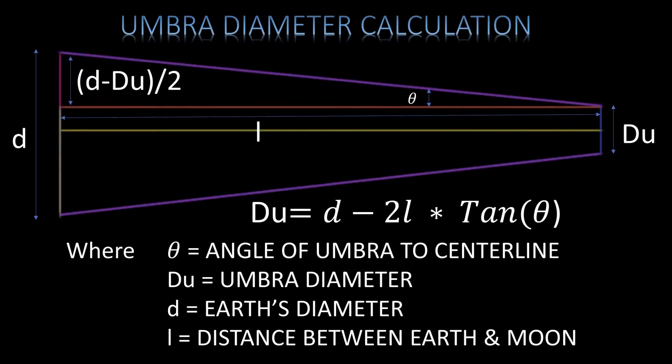Once we have theta, we can calculate the umbra diameter, du, by the formula shown, where small d is the earth's diameter and small l is the distance between the earth and moon.